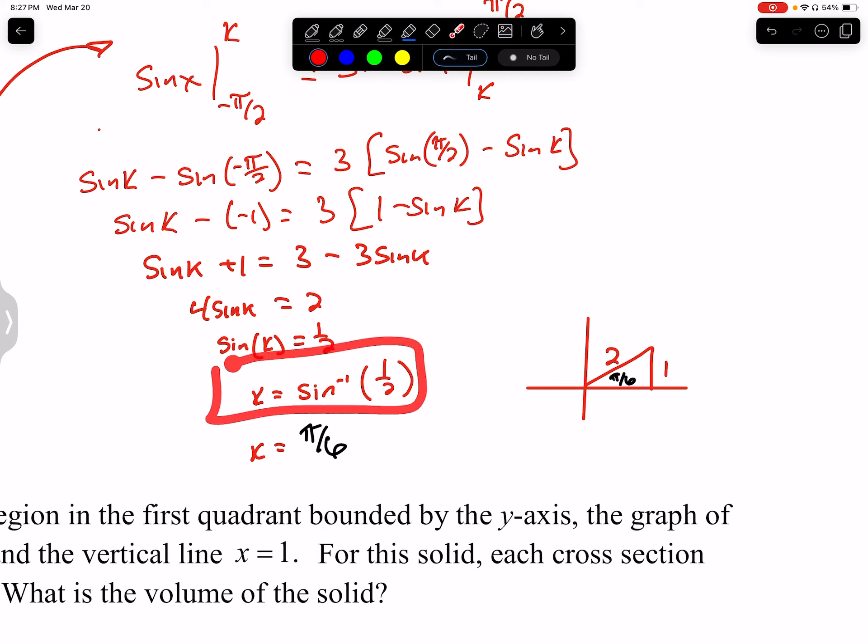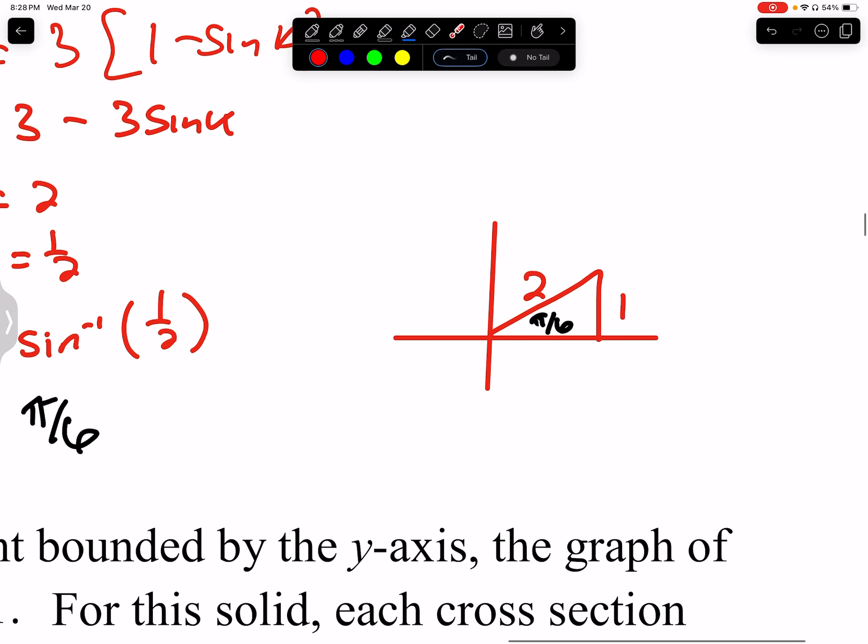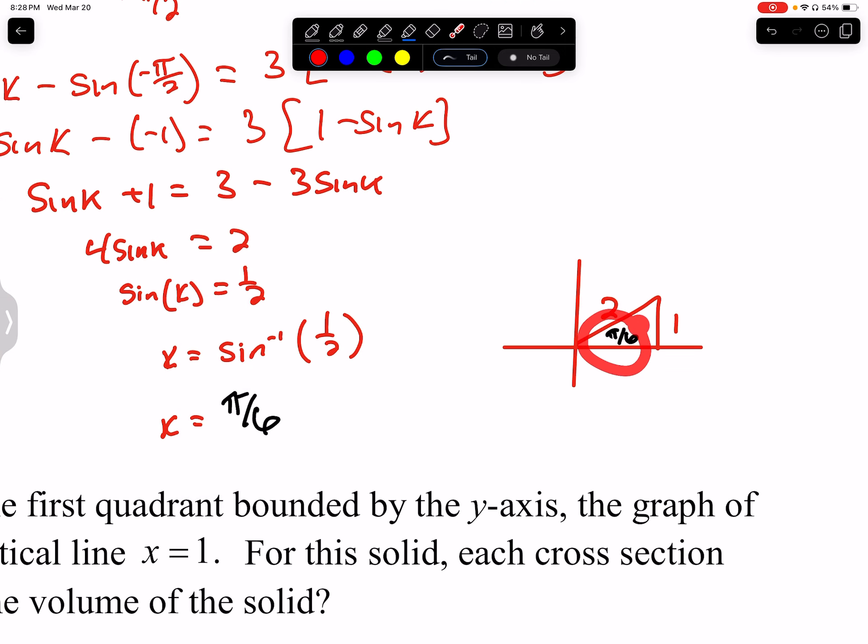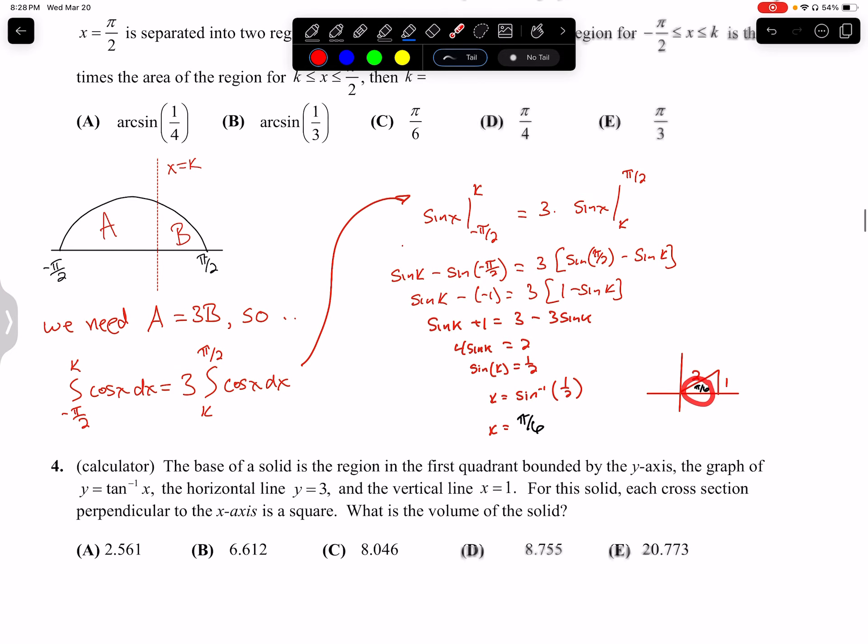This is asking what angle for sine gives us 1 half for the answer. So here's a picture in quadrant 1. Sine is y over r. Y is 1, R is 2. It's a special right triangle of 30, 60, 90. In radians, 30 is pi over 6. So what I'm suggesting is that if x is equal to pi over 6, then this area here is going to be 3 times this area here. So I'm saying it is this right here.